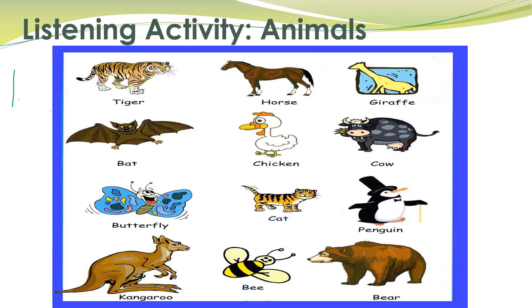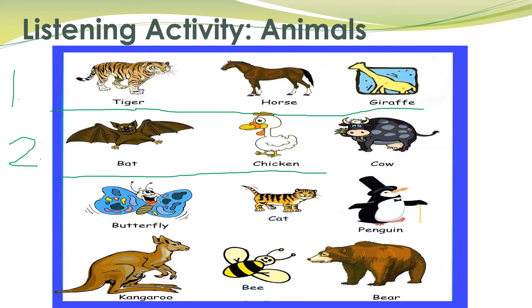Where is the tiger? Here. Next, number two: I want you to circle the chicken. Number three: butterfly. Where is the butterfly? Here.